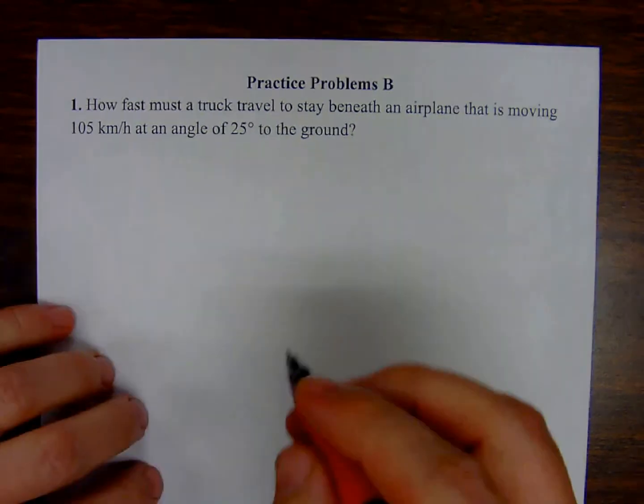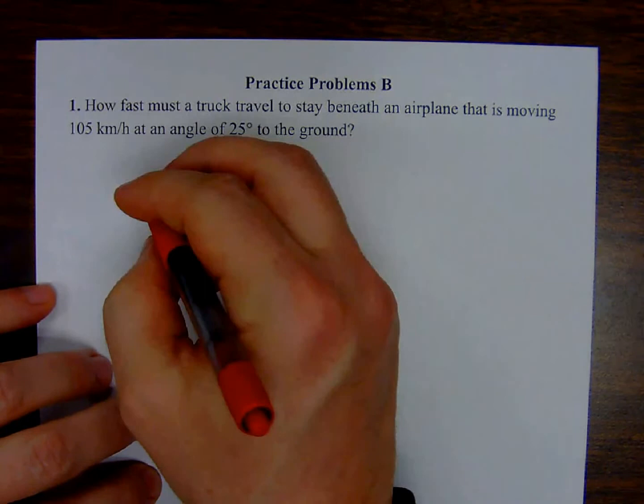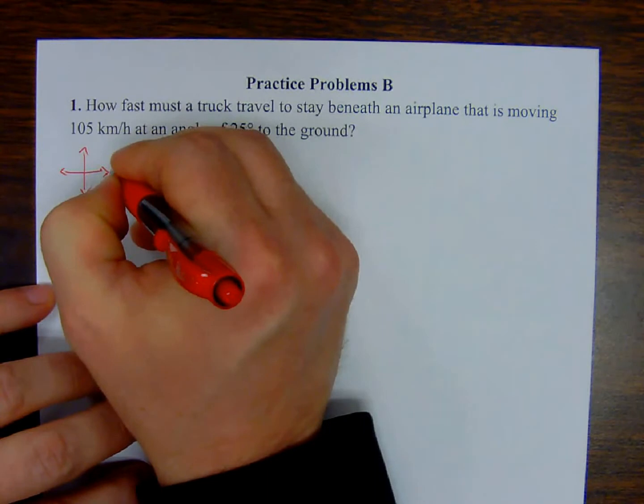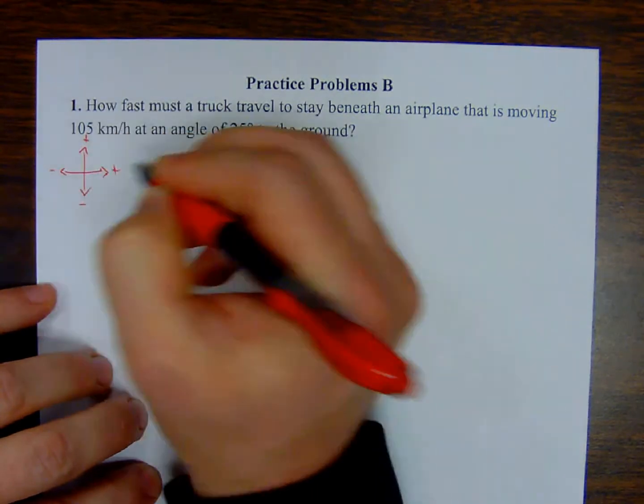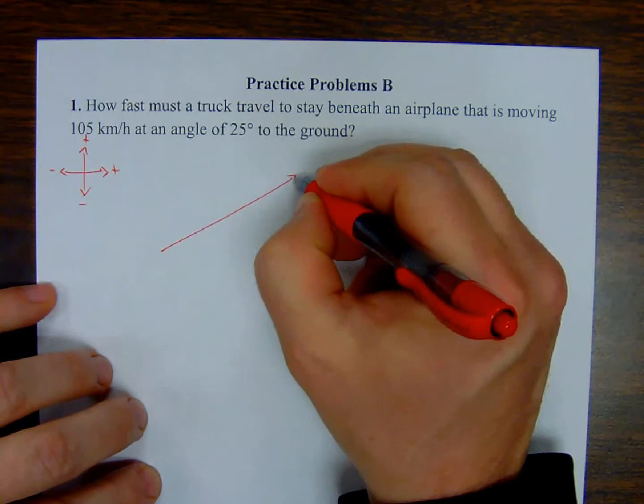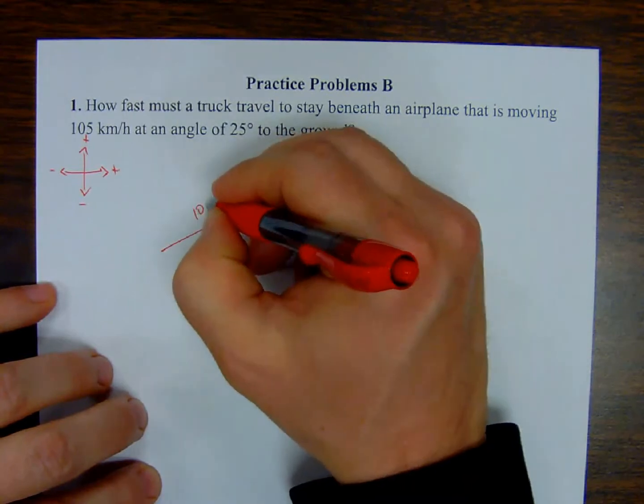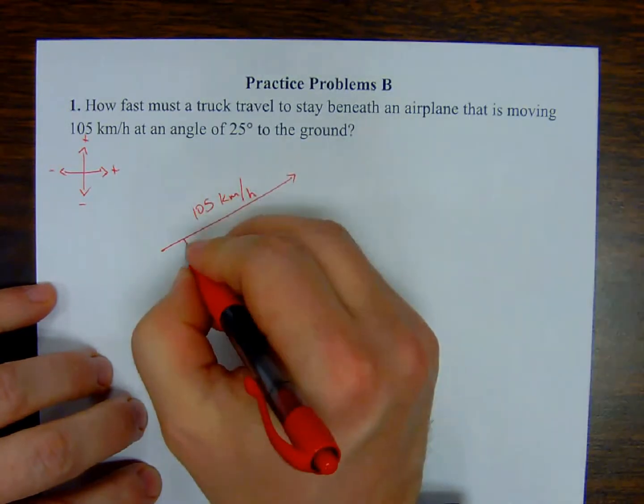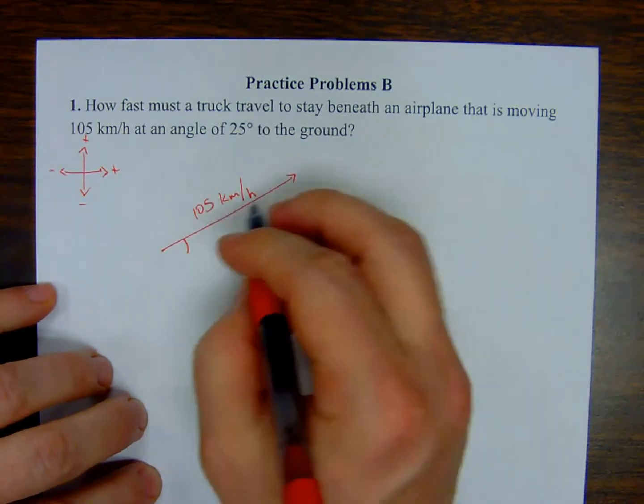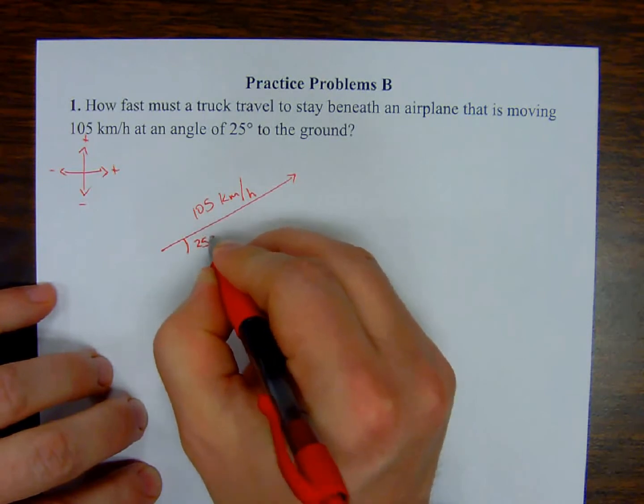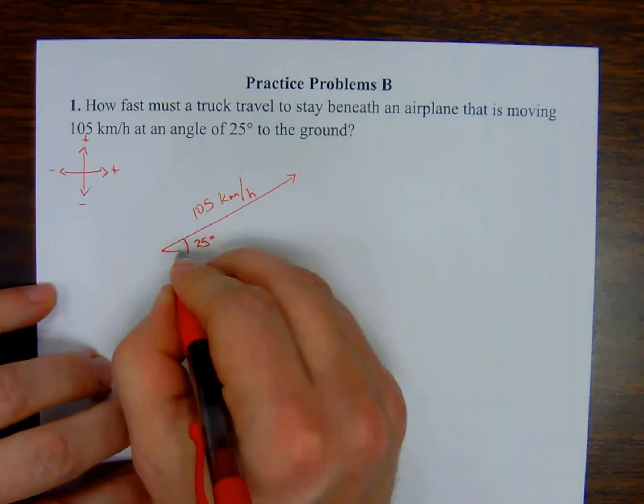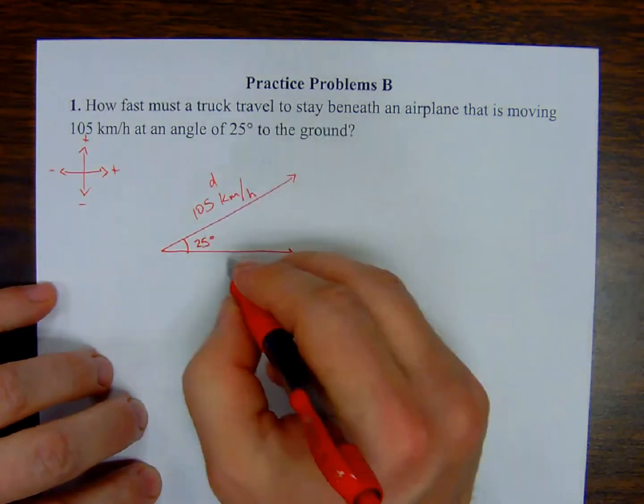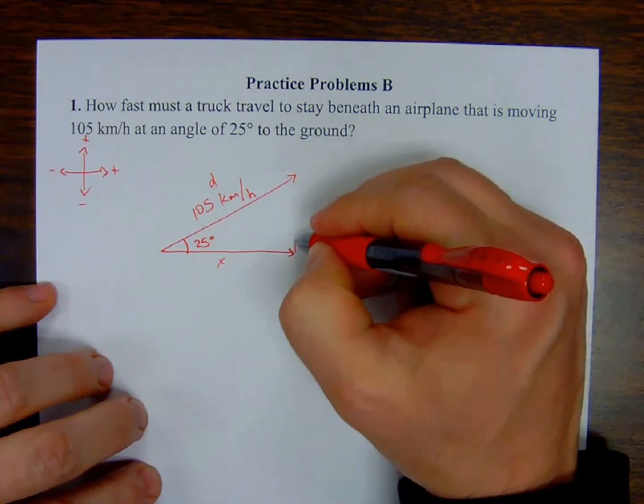So we have an airplane. I'm going to define my coordinate system here: plus, plus, minus, minus. So I have our plane, 105 kilometers per hour, traveling at this velocity at an angle of 25 degrees from the horizontal. So here is the resultant. Here is the x component. Here is the y component.